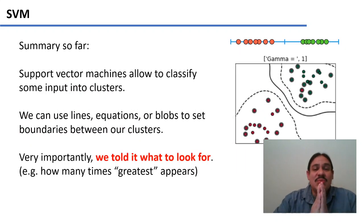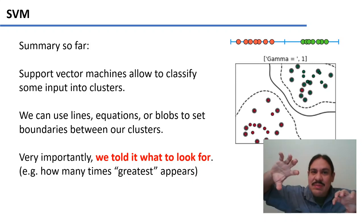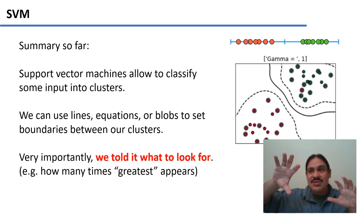Summary so far, support vector machines allow you to classify inputs into clusters. We tell the computer what clusters we're looking for, and then the computer tries to find the maximal separation between the clusters in n-dimensional space. You can separate them with lines, you can separate them with blobby circles, you can separate them with polynomial equations, but it's going to try to find the maximum separation between them so that it can establish a decision boundary.